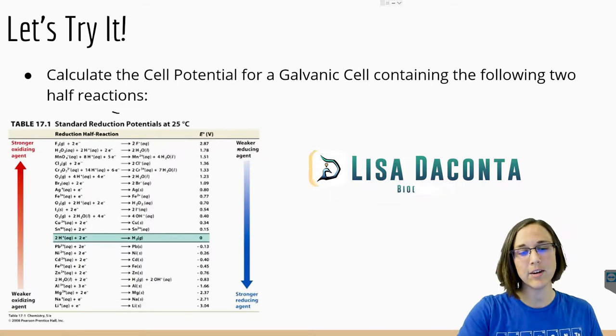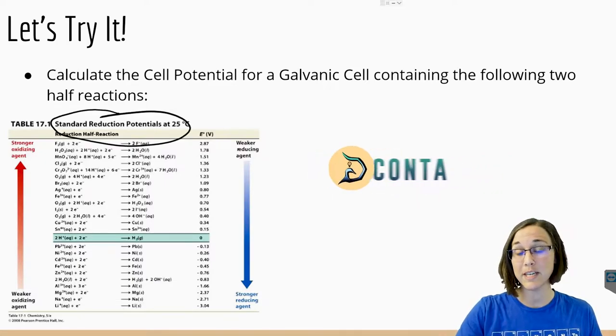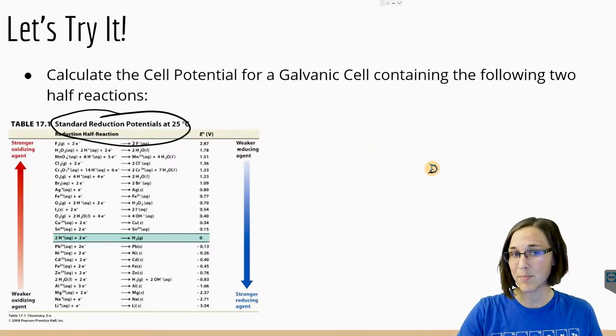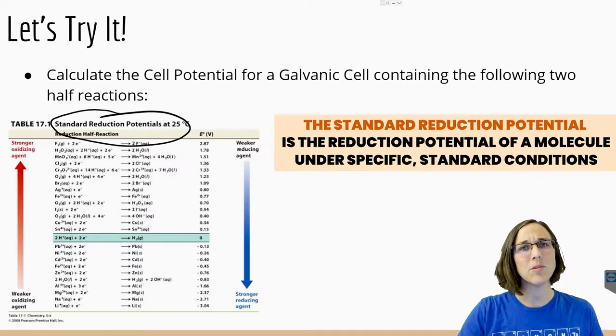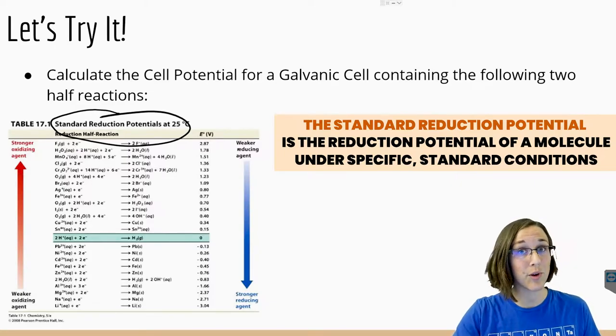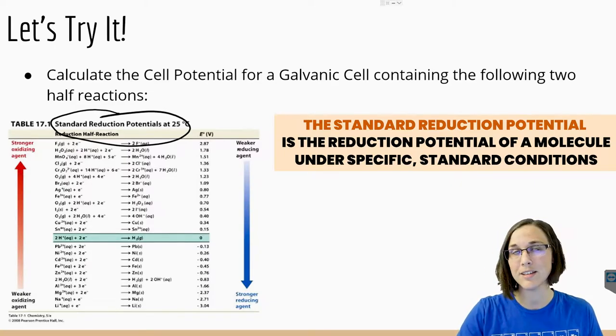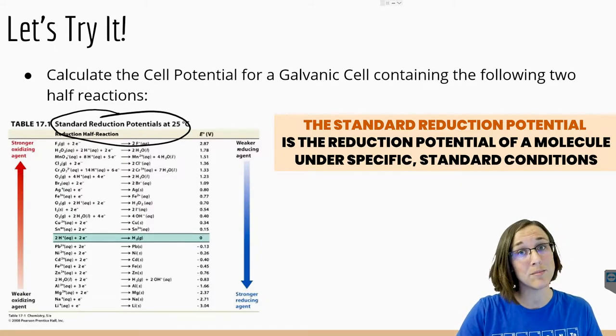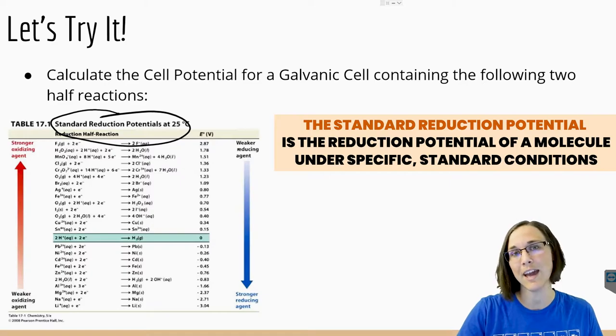When you look up these standard reduction potentials in a table, make sure you are finding the correct half reaction with the correct charges associated with the chemicals or atoms that we are looking at.